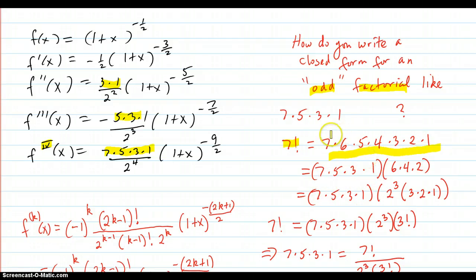Then you realize that's 7, 5, 3, 1, and the rest of it is 6, 4, 2.